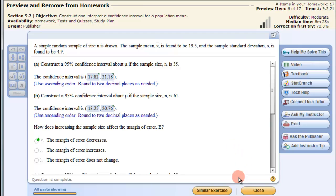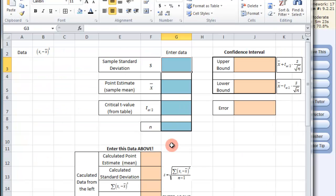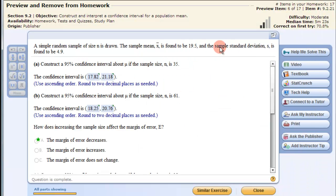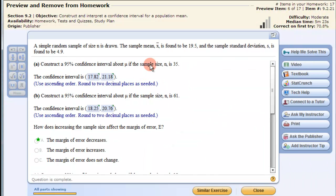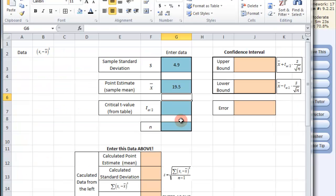Now how do we get that interval? I have created a document here in Excel. A little bit about it: the blue boxes will always be inputs and the red boxes will always be outputs. So here we are going to enter our sample standard deviation and our sample mean. We need to get a t statistic and then we have n for the number. Sample standard deviation is 4.9 and 19.5 for the mean. And then we need our n and our n is 35.